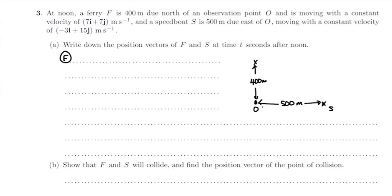What we need to do is find the position vector of these at any time. At this time I'm going to work in i's and j's. We'll start with the ferry. So rF equals, remember the formula, it's r₀, so for the ferry he's 400j because he is due north of the observation point, plus the ferry's velocity 7i plus 7j times t.